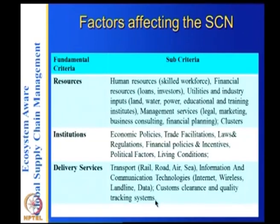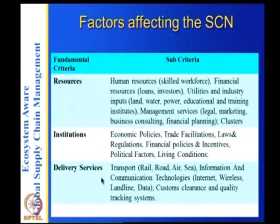For example, it takes only 8 hours to transfer goods in Singapore whereas it may take 8 days in some other places. Laws and regulations, financial processes, political factors, and living conditions are all different. For places A and B, you give scores for each sub-criterion and combine them into an institution score. Similarly for delivery services, you have transport, information communication technologies, customs clearance, and quality tracking systems.